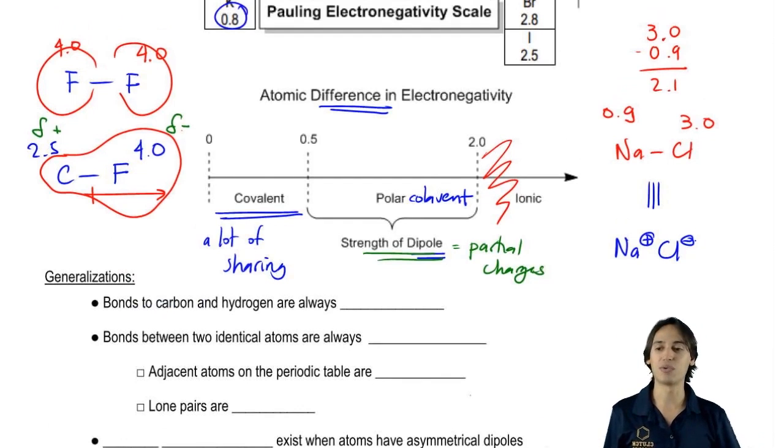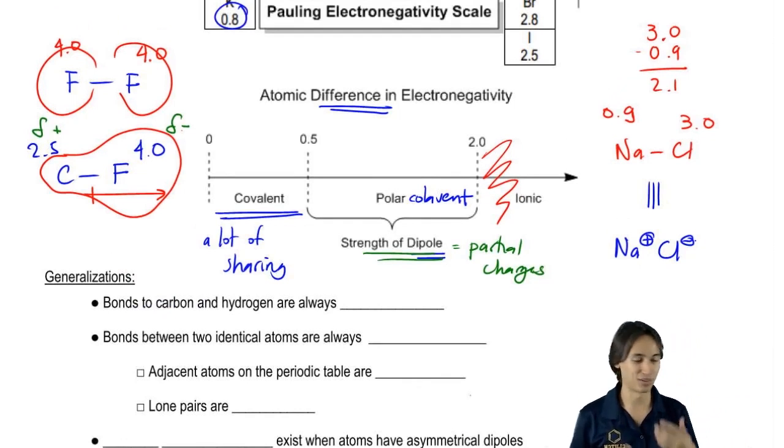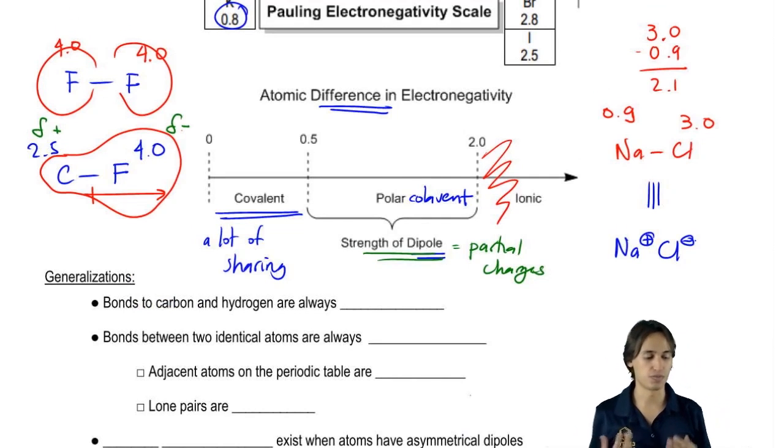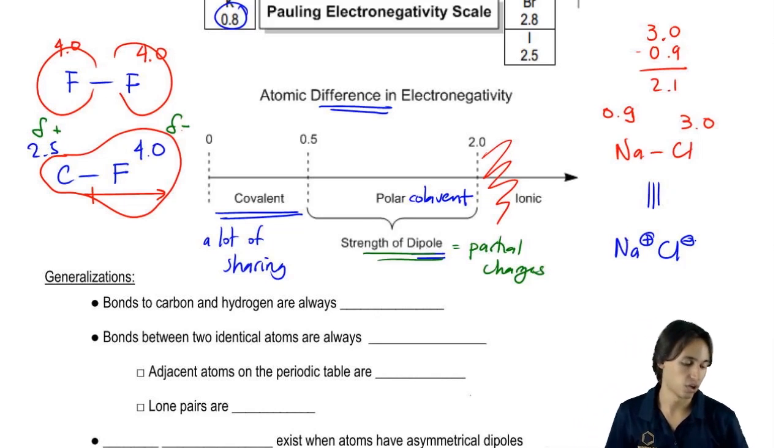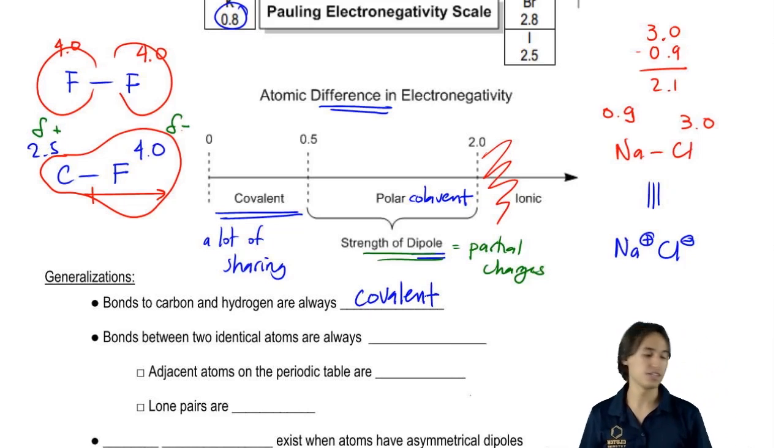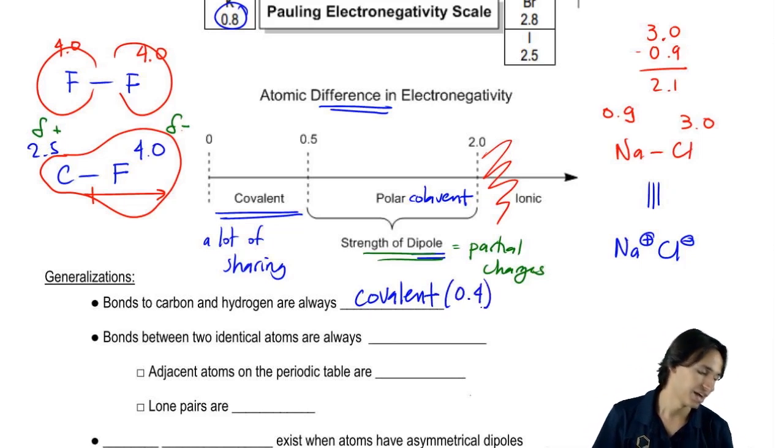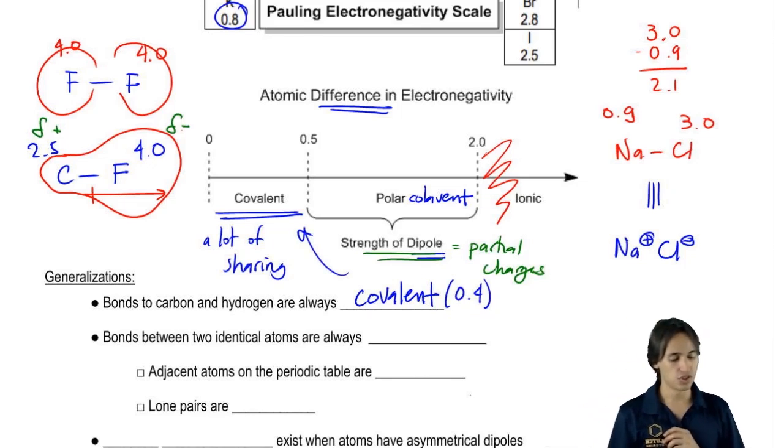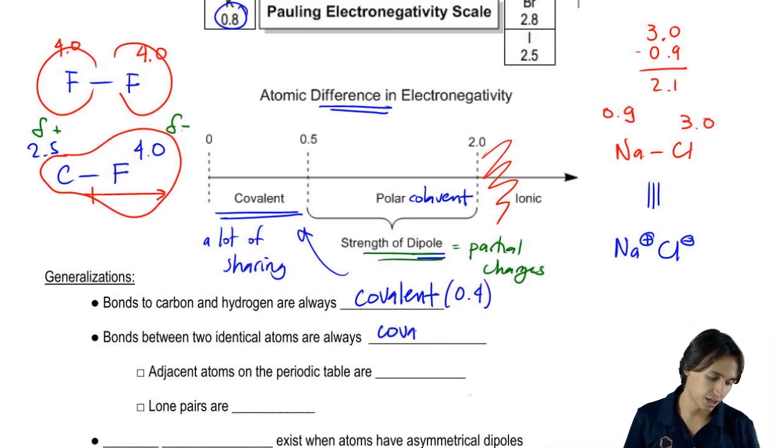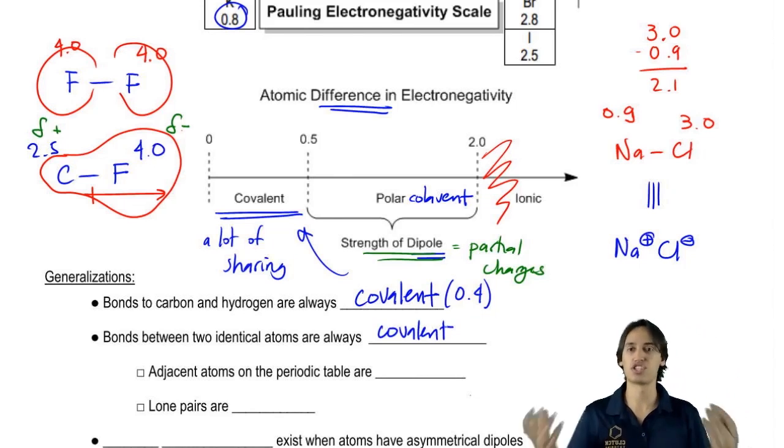So now you're probably thinking, I'm not going to have these numbers memorized all the time, so how do I figure out these questions of polarity? What I would say is there are a few general rules that are going to work for 99% of the time. Instead of memorizing each number, we can just remember these rules. The first thing is that bonds to carbon and hydrogen are always going to be covalent. If you figure out the numbers, you're going to find out that the difference is 0.4 and that difference is so small that that puts it right into the covalent area. Bonds between two identical atoms are always going to be covalent.